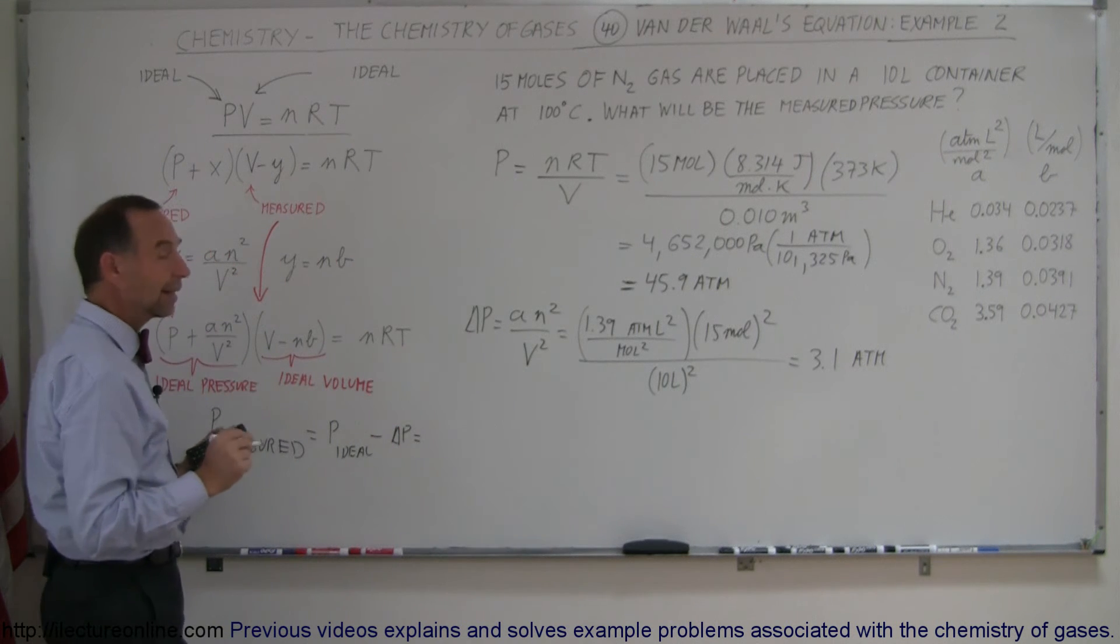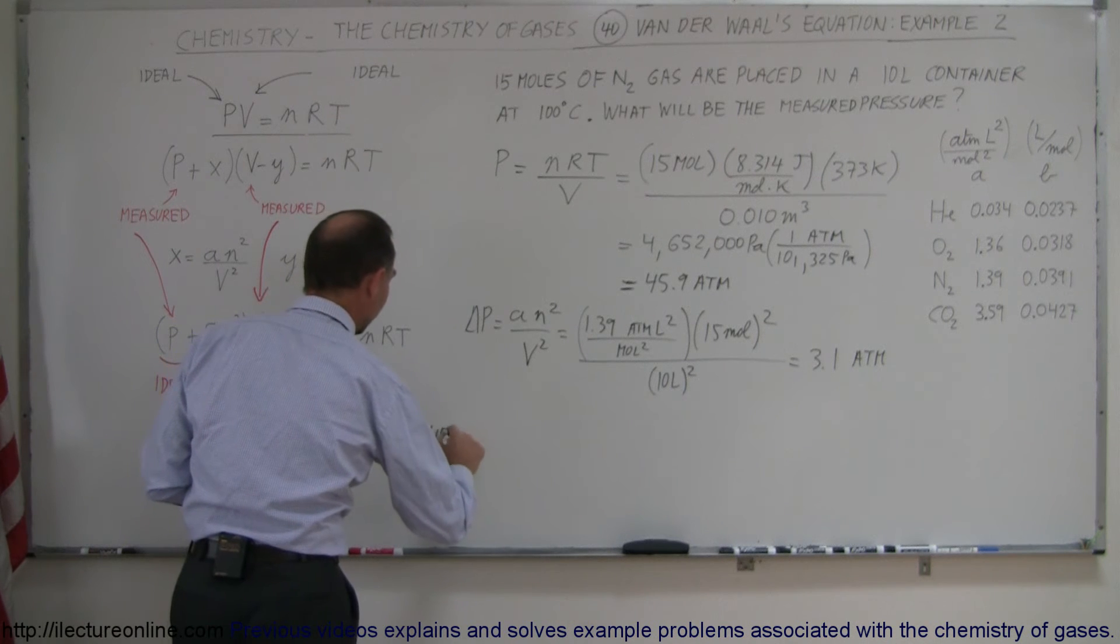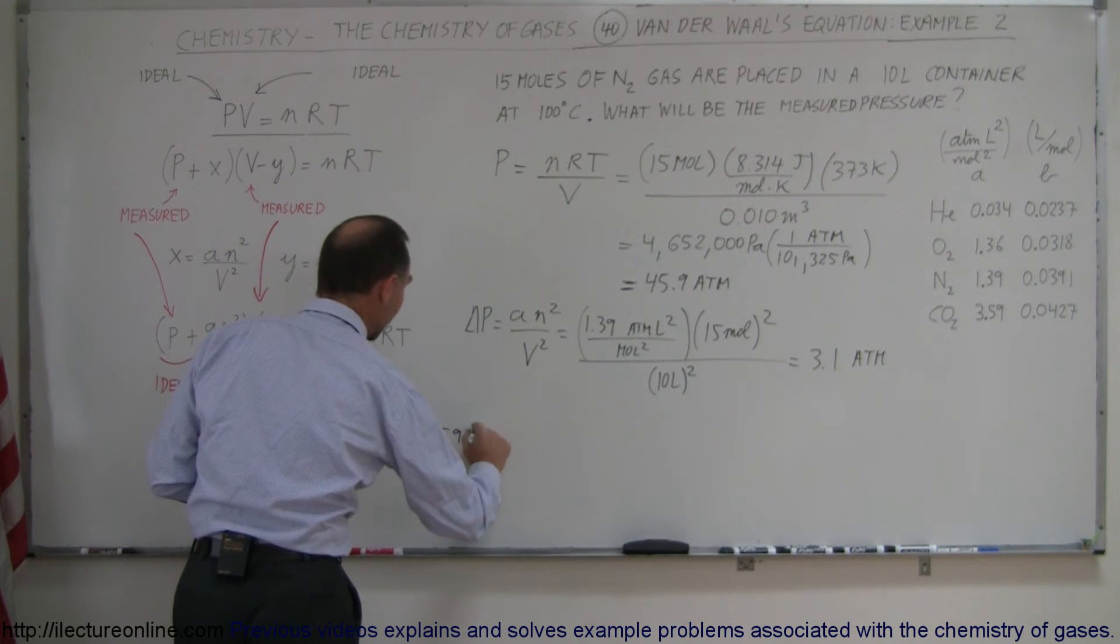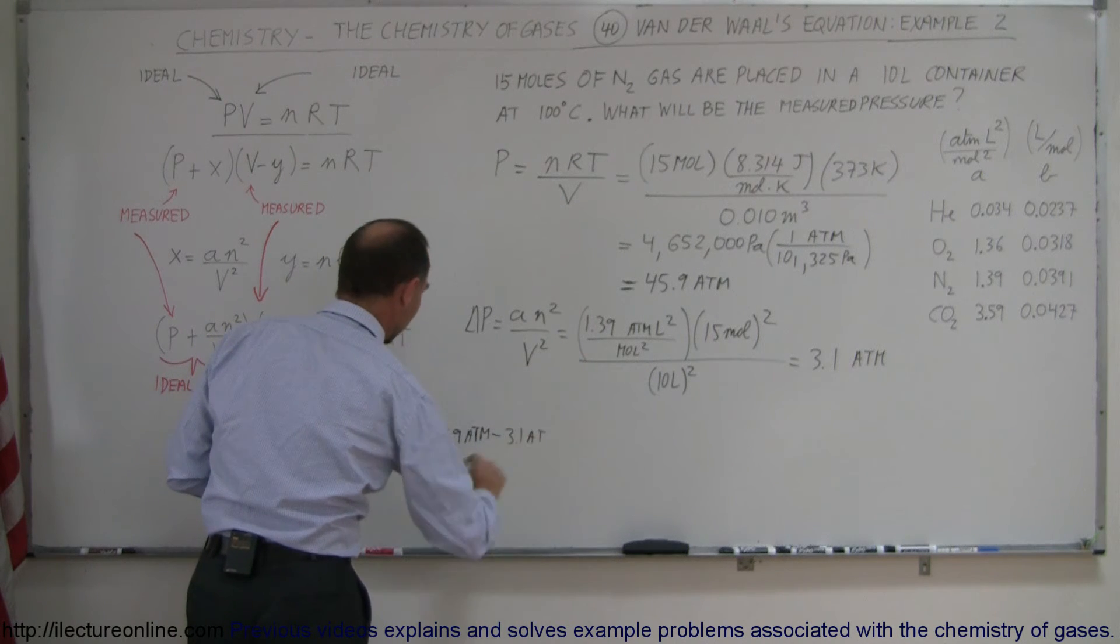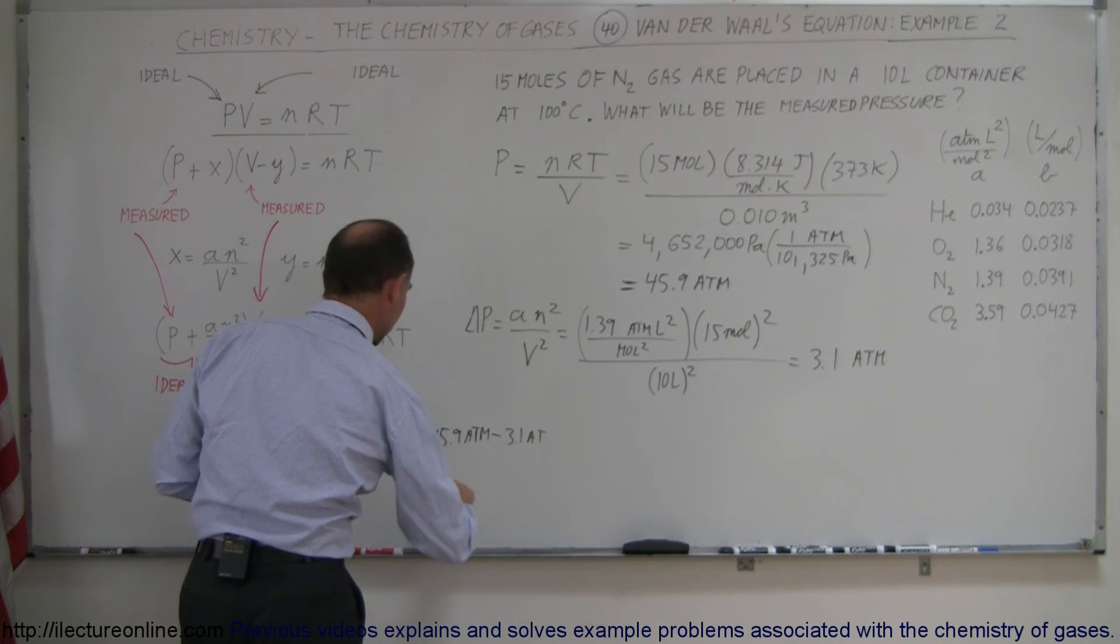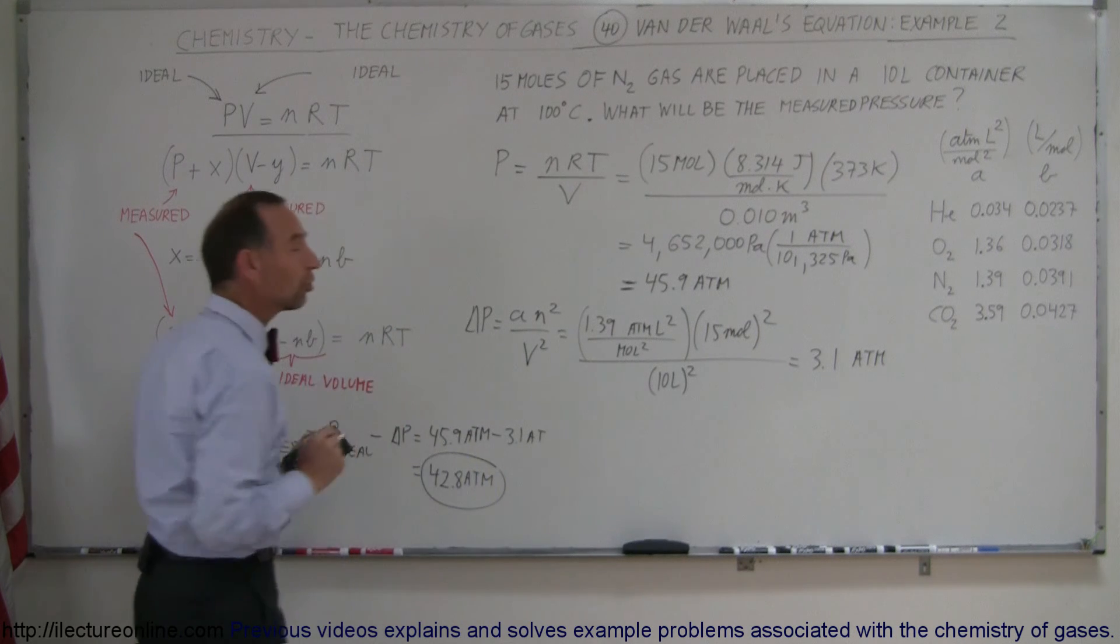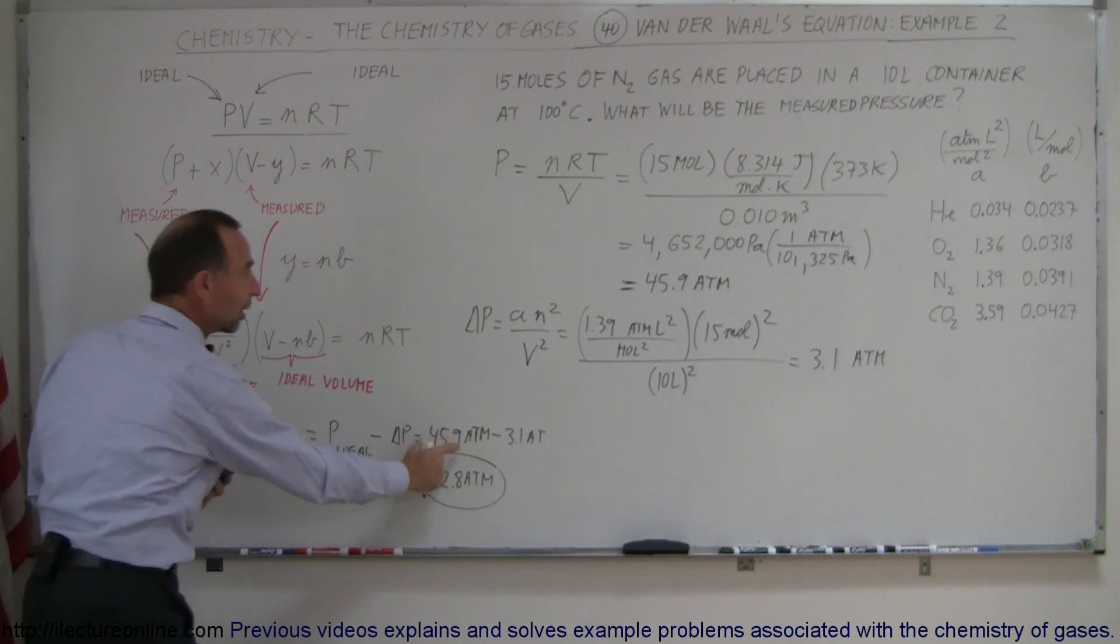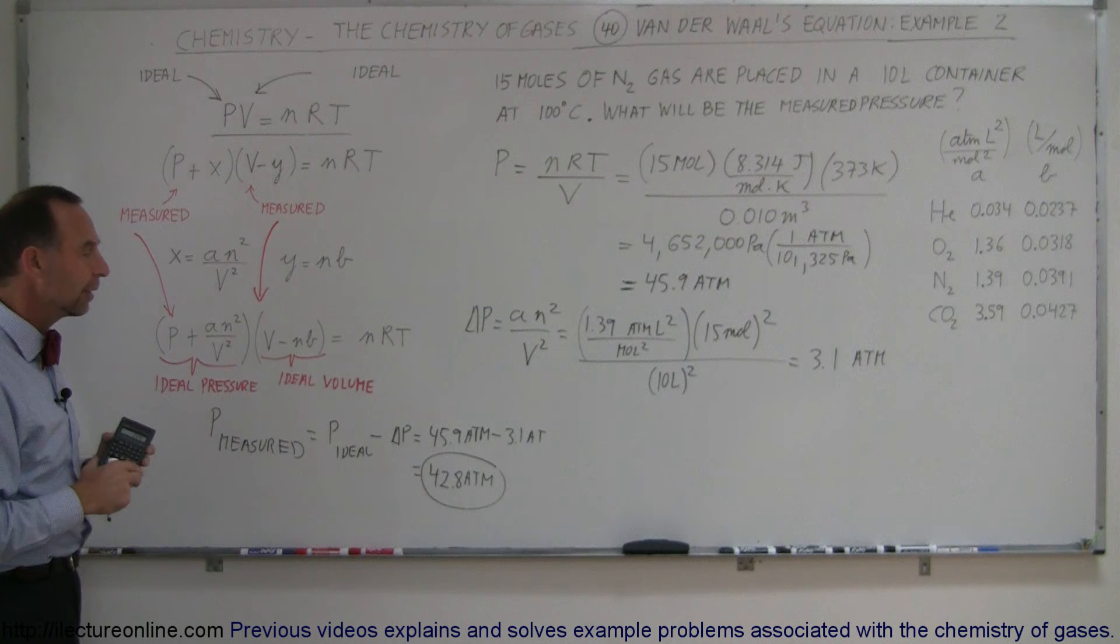And so in reality, if you then were to measure that with a pressure gauge, you would measure pressure as 45.9 atmospheres minus the 3.1 atmospheres. So this would be equal to 42.8 atmospheres. And that is the pressure you would measure, not the ideal pressure that you just calculated with your equation.